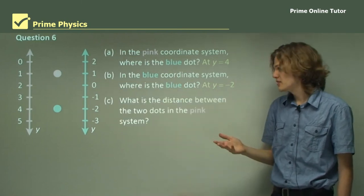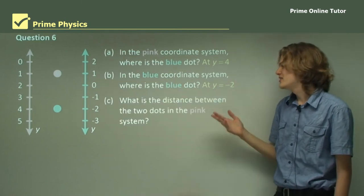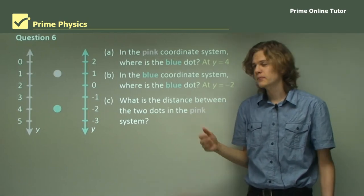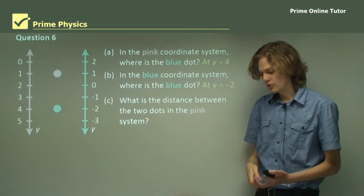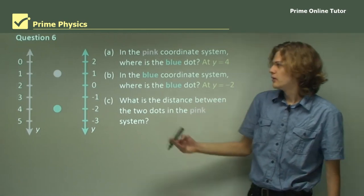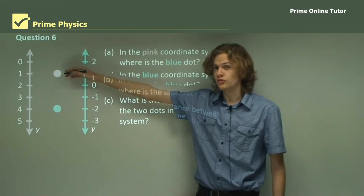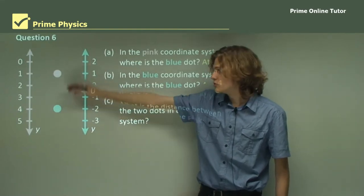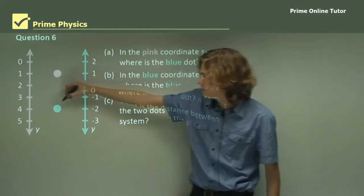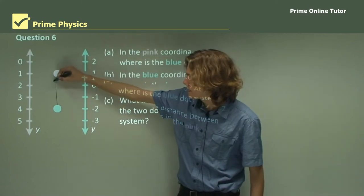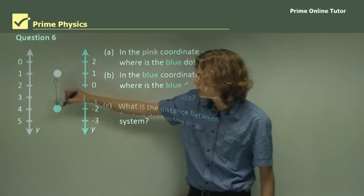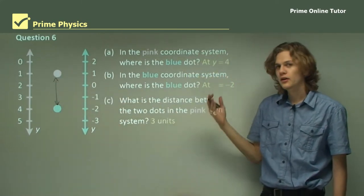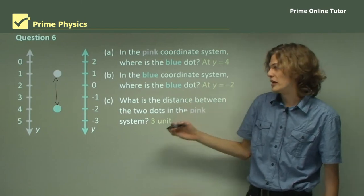So, part c — what is the distance between the two dots in the pink system? In the pink coordinate system, the pink dot is at 1 and the blue dot is at 4. The distance between 1 and 4 is 3, so in the pink coordinate system the distance between the two dots is 3 units.